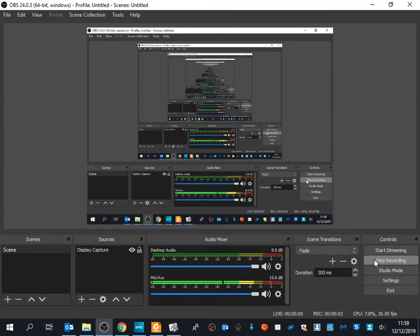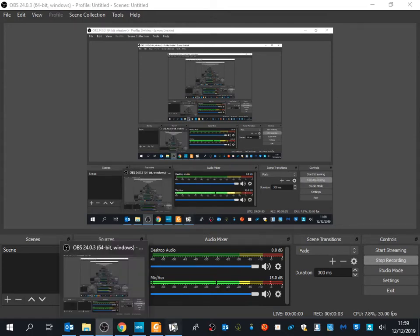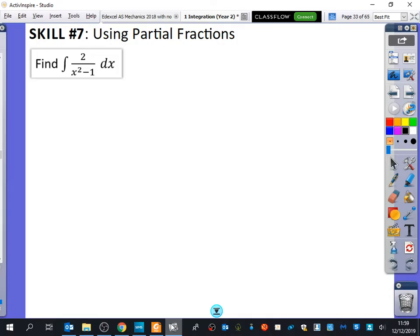One of our last skills we're going to look at now is integrating things that look like this. I've given a massive clue about what we're doing because I've written skill number seven: partial fractions. However, if you look at this thing that you've got here, you should be able to tell me some things that we can't use and why we can't use them.